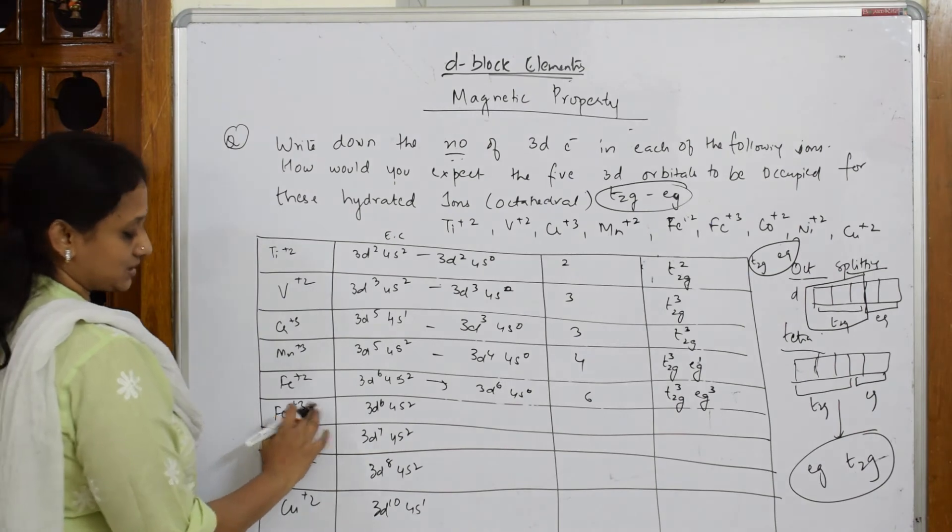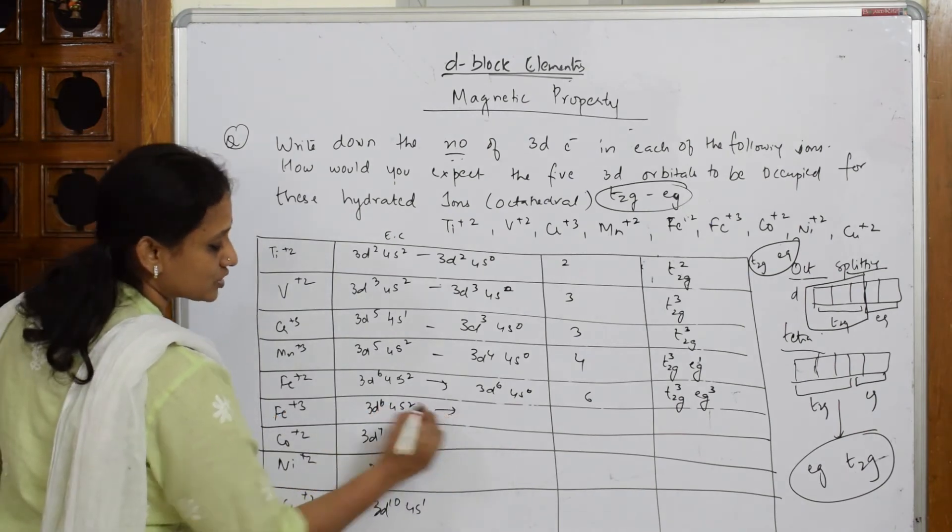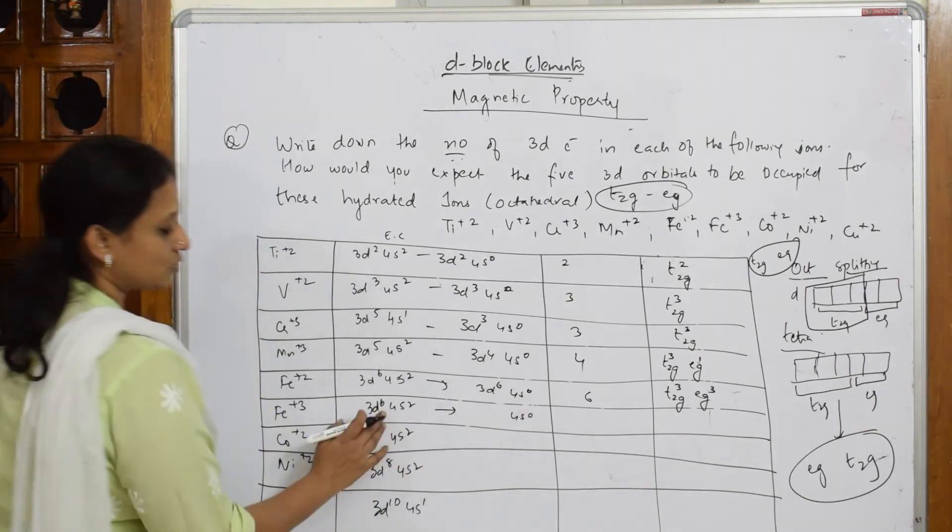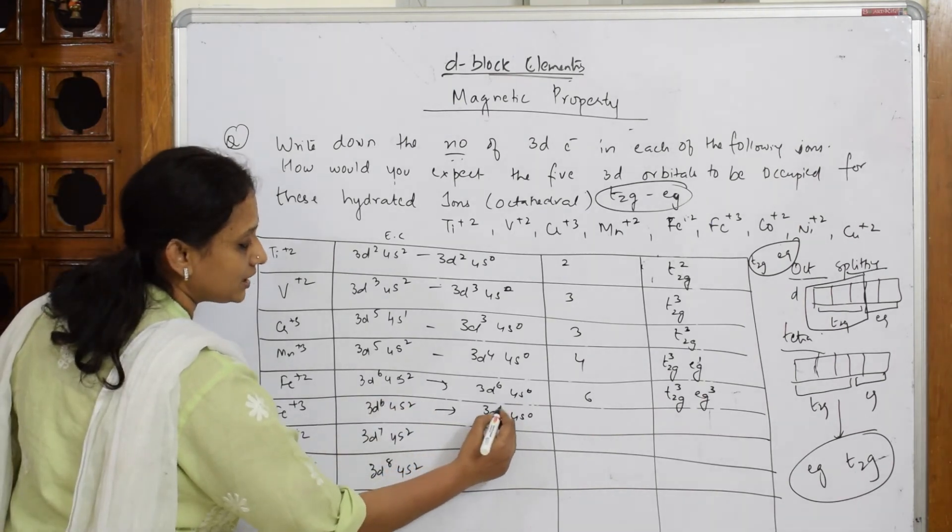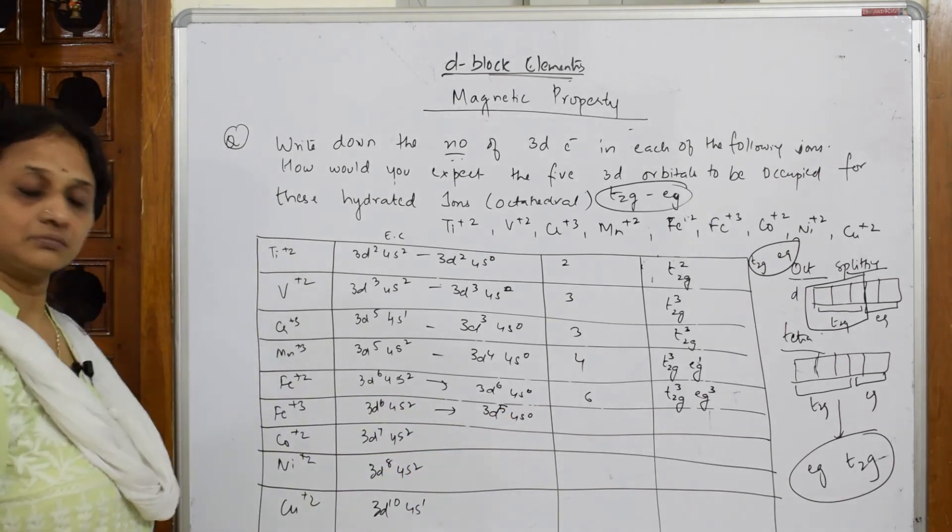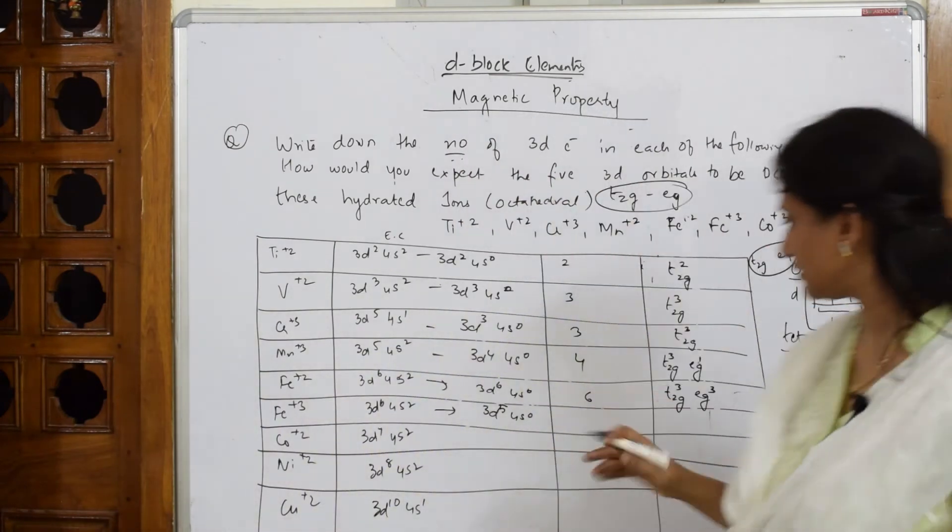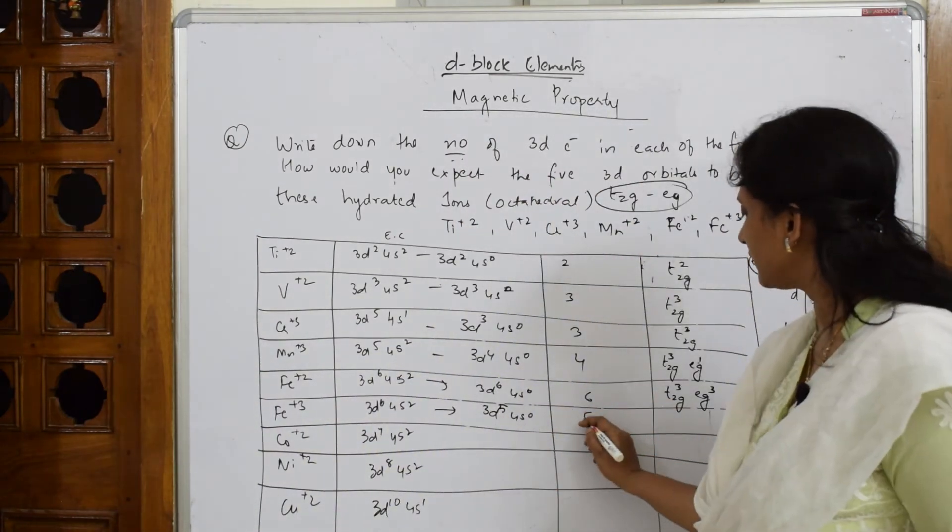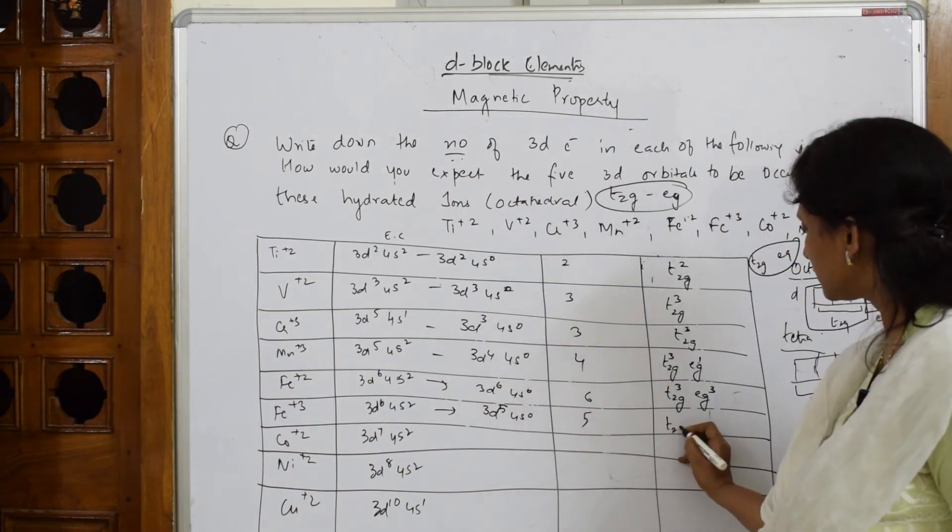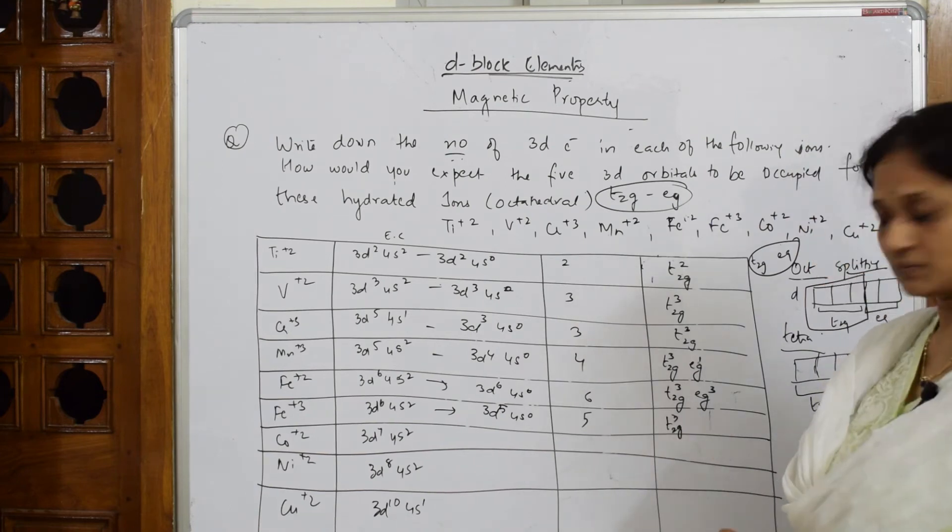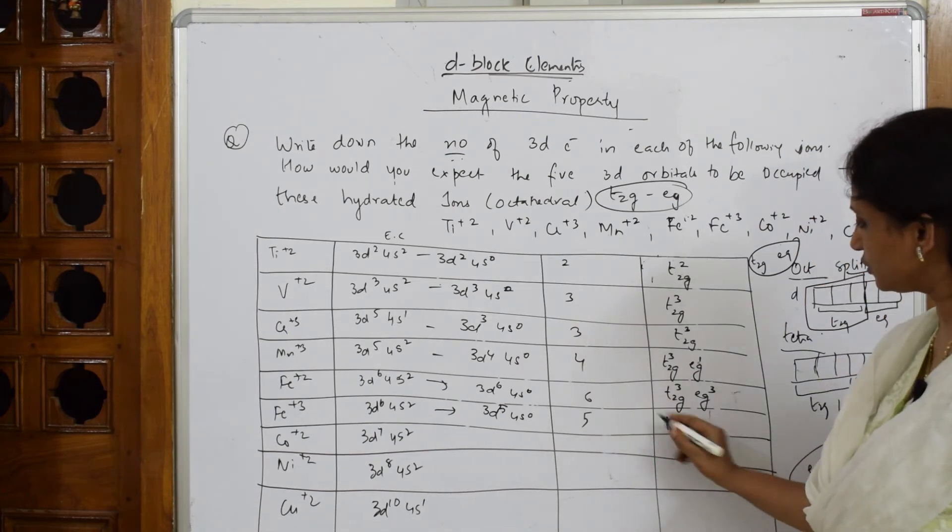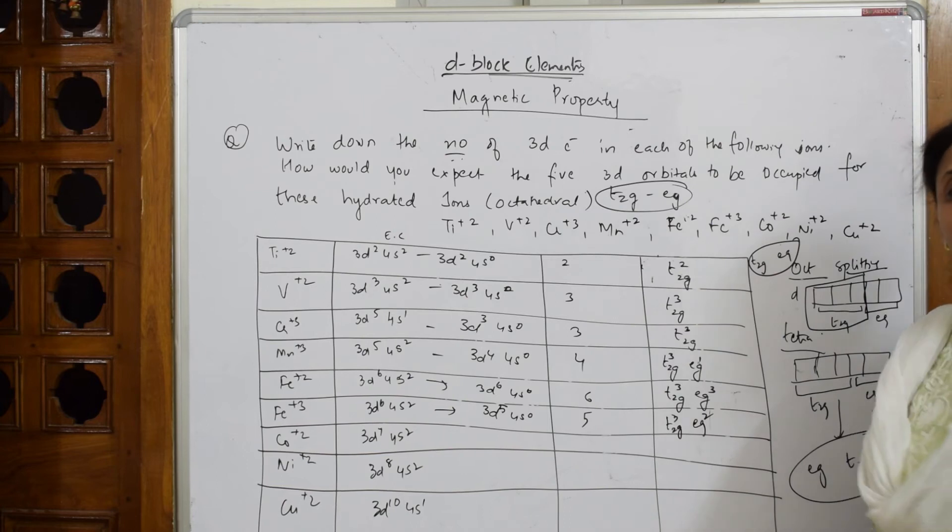For Fe plus 3. Remove 2 electrons from here. This becomes 0. And 3D⁶ becomes 3D⁵. How will I write that thing now? 5 unpaired electrons. So start filling. T2G will be 3. And your EG. And your EG distribute those 2 here.